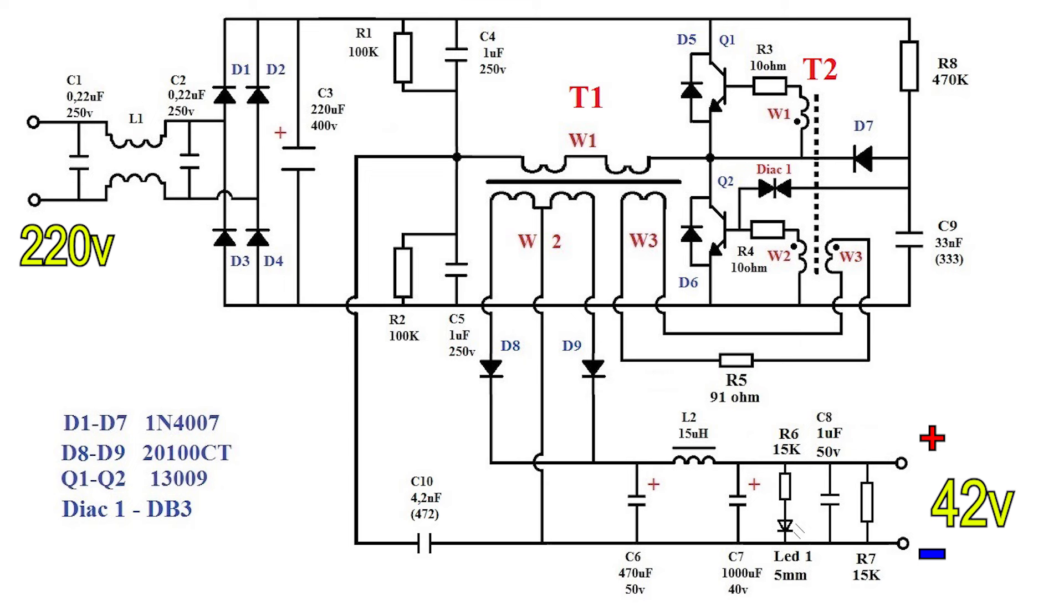There are two transformers here, power T1 and control T2. In transformer T1, the primary winding is divided into two half windings, each with 27 turns.